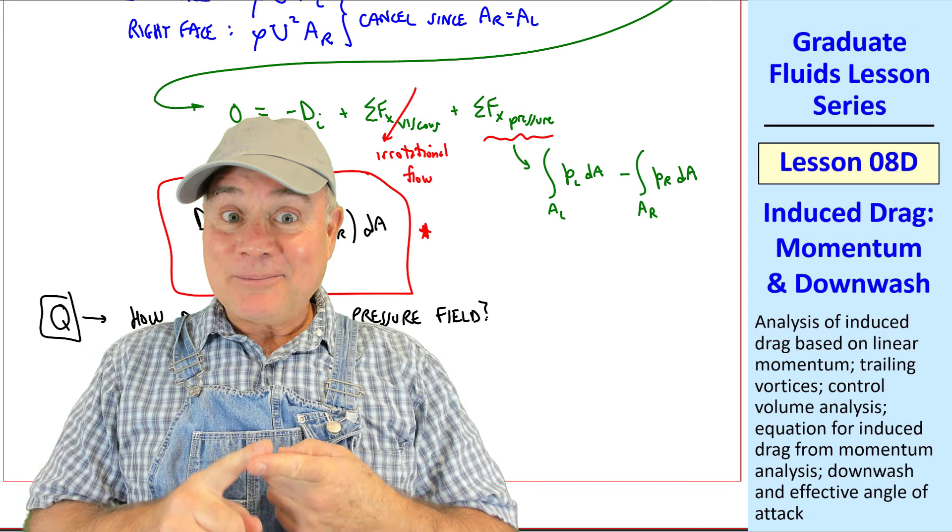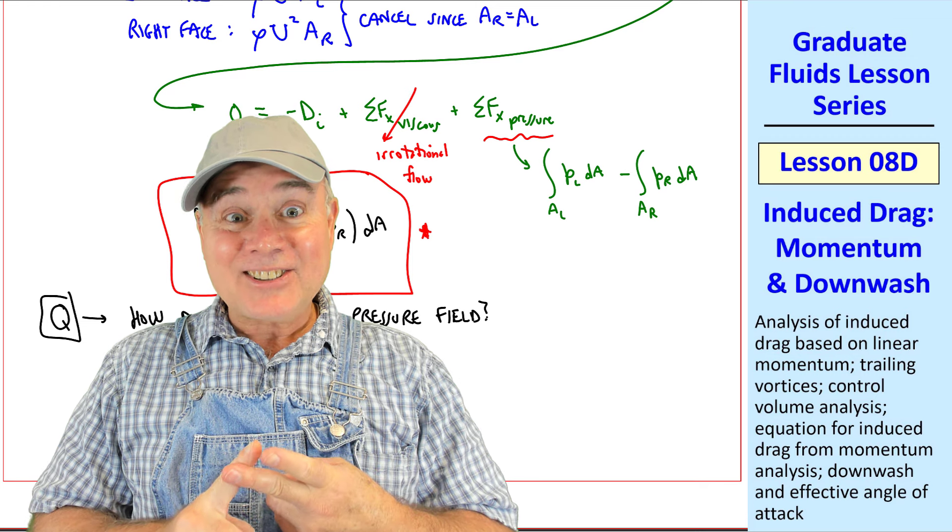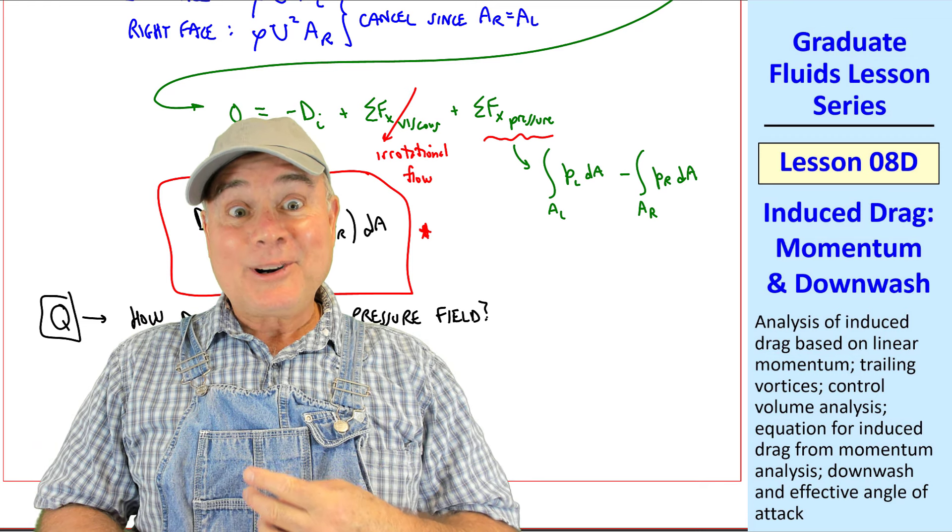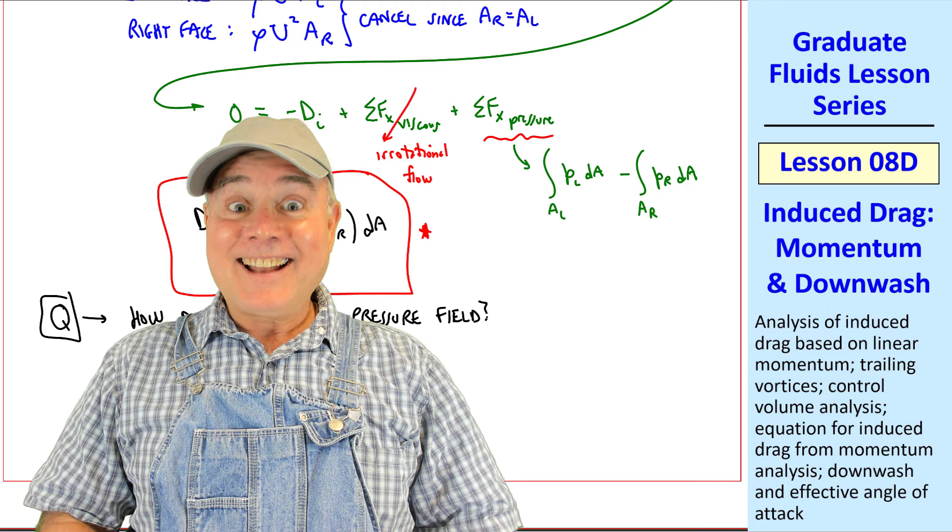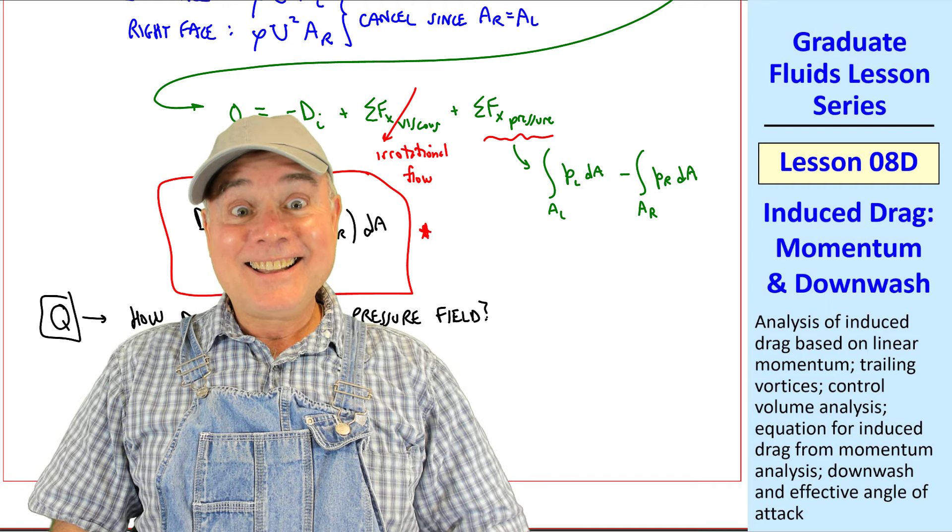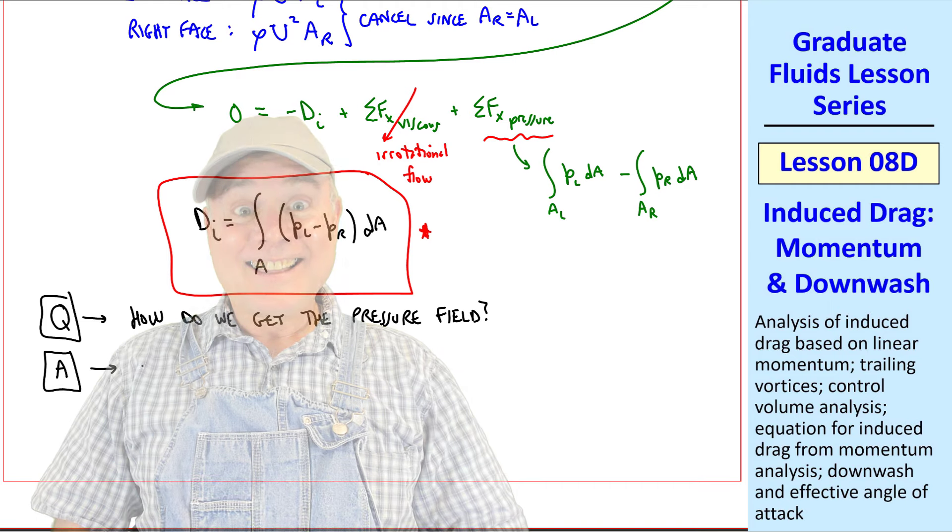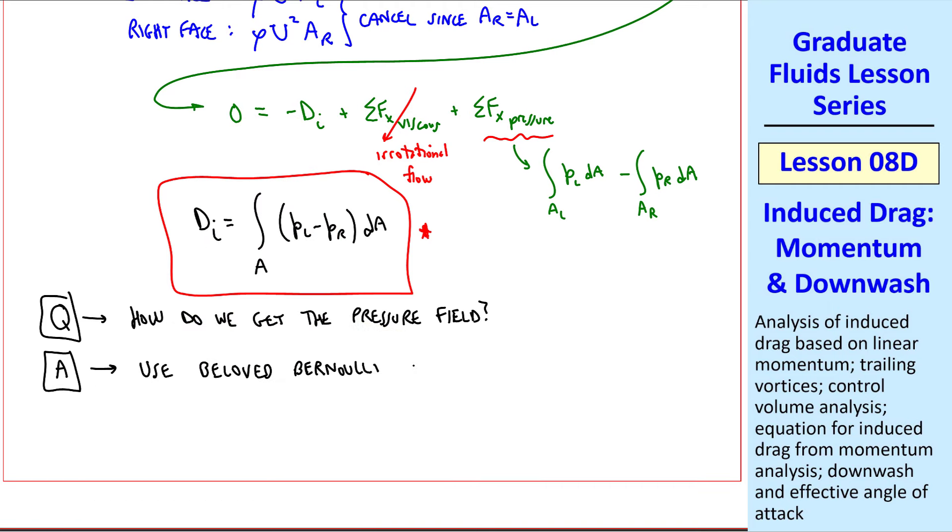So here's a question for the students. How do we get the pressure field? Well, since the flow is incompressible and irrotational, can we use beloved Bernoulli? Yes, we can. Golly, it's not often I get the right answer. Well, you did this time. Well, as Dud said, the answer is that we can use the beloved Bernoulli equation, since we're dealing with steady, incompressible, and irrotational flow.